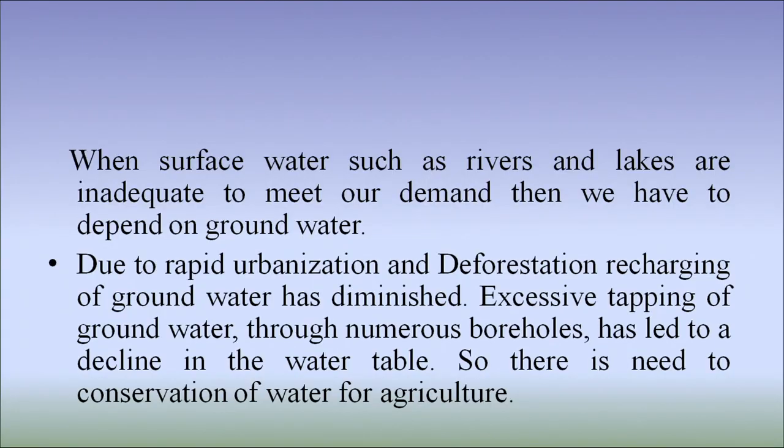Chirapunji in northeast India was once the wettest place on earth. It was full of dense forests which formed rain clouds. Because of the indiscriminate cutting down of forests, the top soil is washed away by rain and the area has become barren. As a result, villagers in Chirapunji have to get water from elsewhere. When surface waters such as rivers and lakes are inadequate to meet our demand, then we have to depend on groundwater. Due to rapid urbanization and deforestation, recharging of groundwater has diminished.